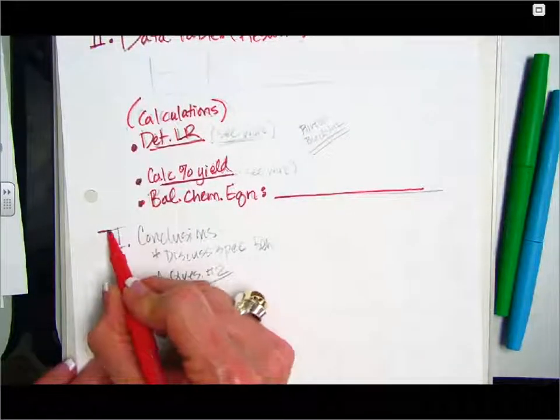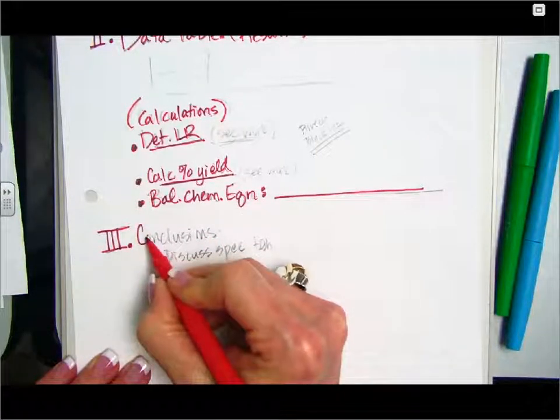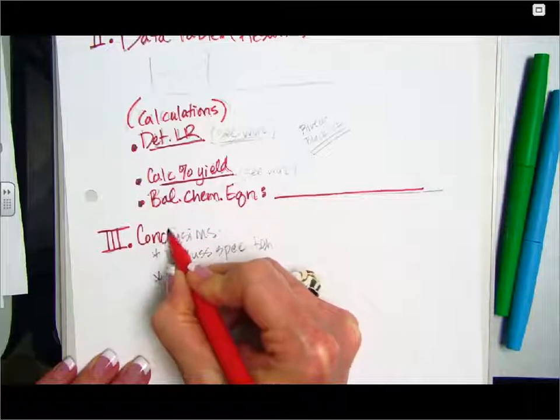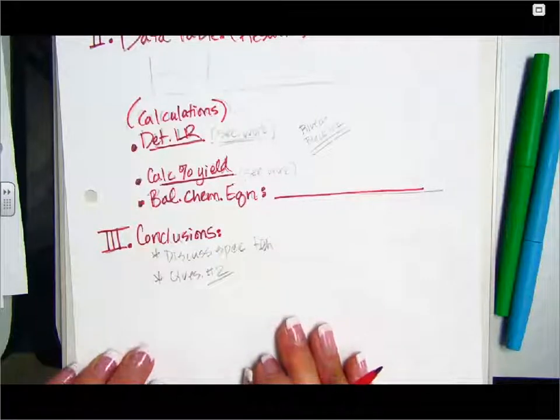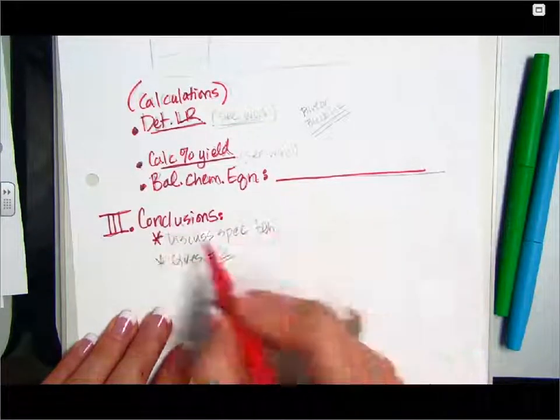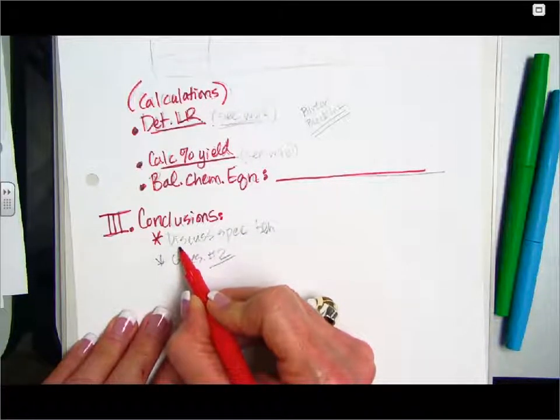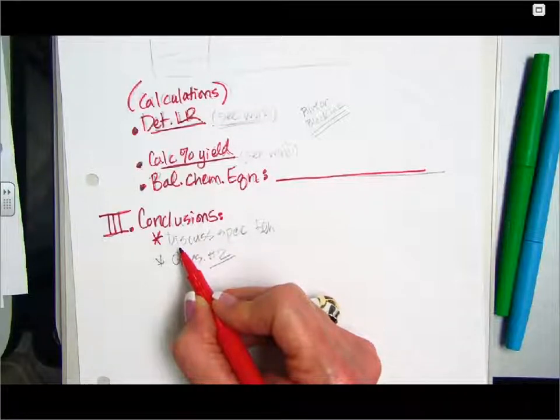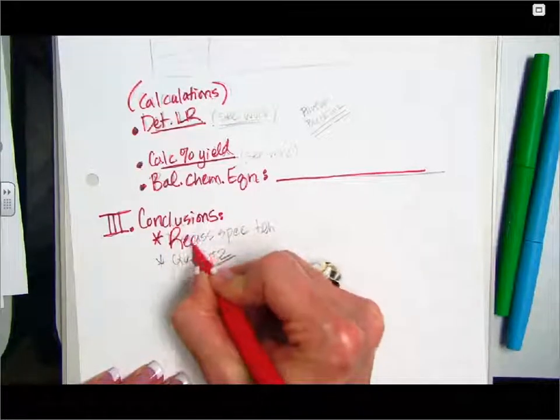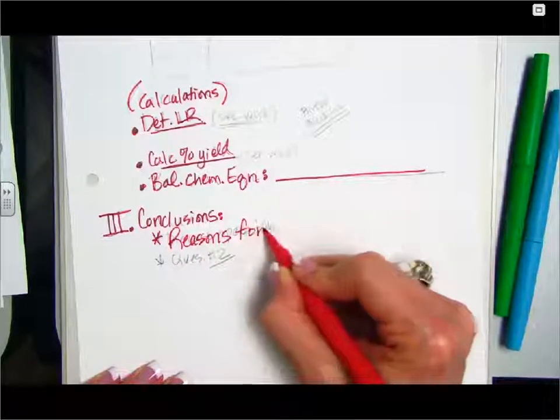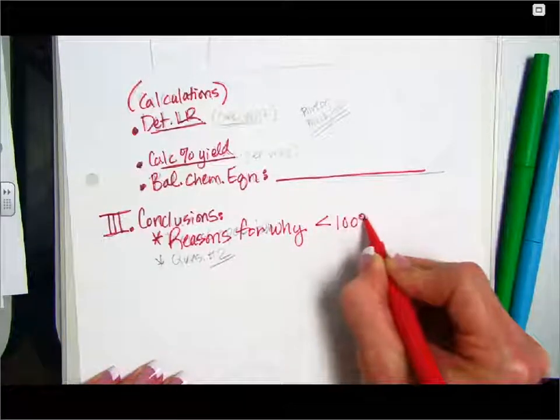The third and final section, and again if this takes more than a page you would go to the next page, but the third and final section of this informal lab should be titled Conclusions. In the Conclusions section, I want you to discuss specific behaviors that would be reasons for why your group got less than 100% yield. So reasons for why you have less than 100% yield. And be specific.